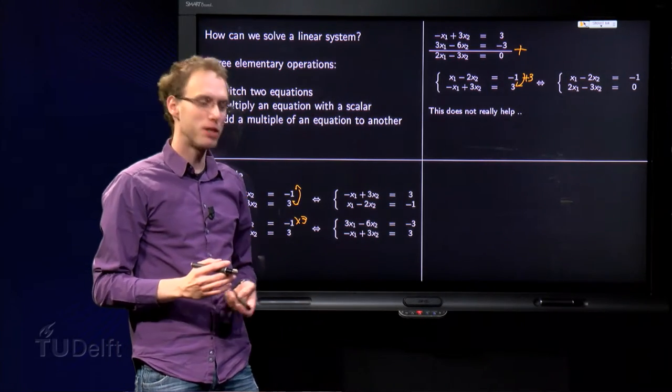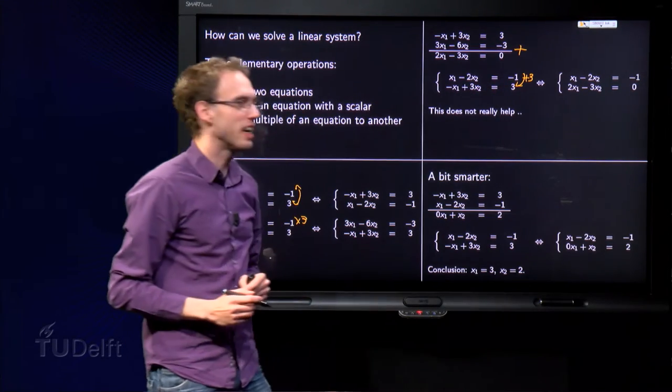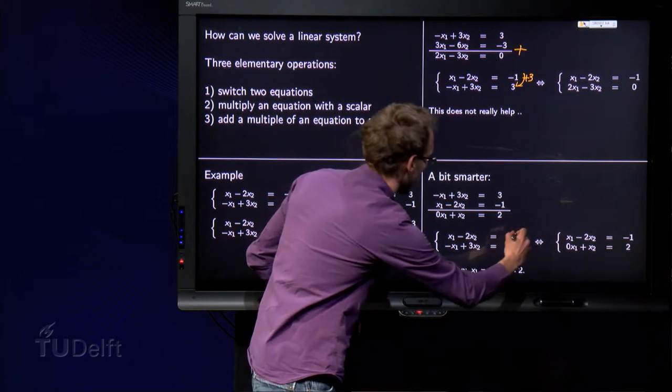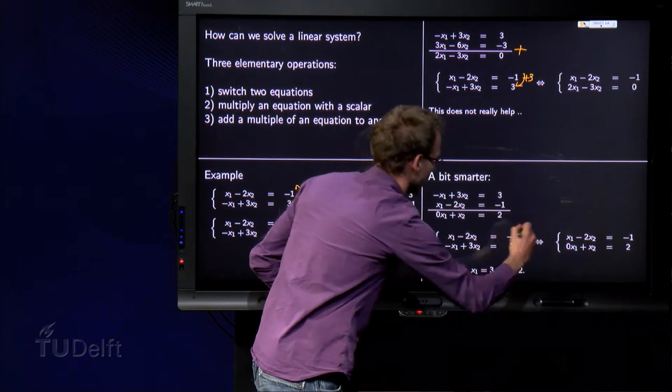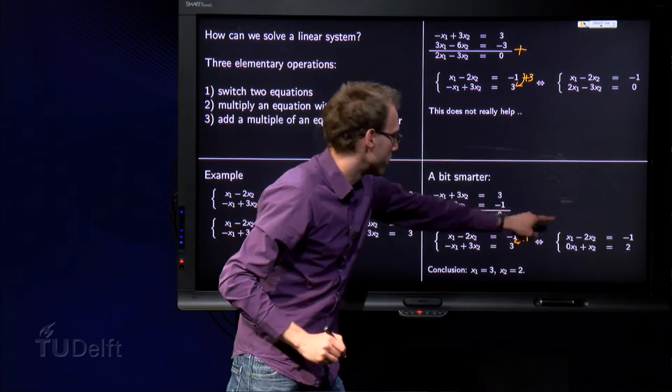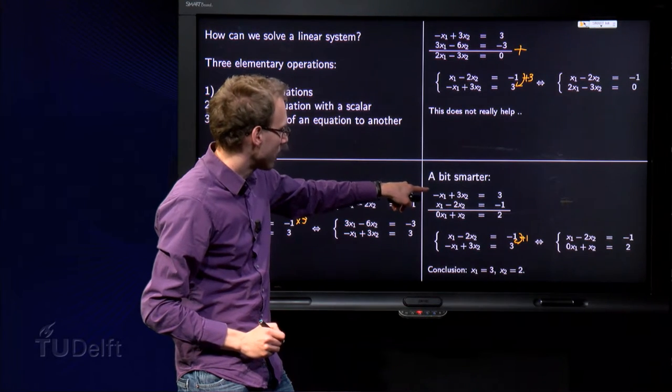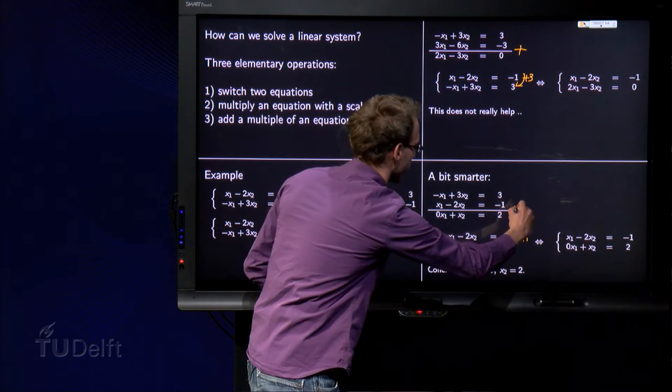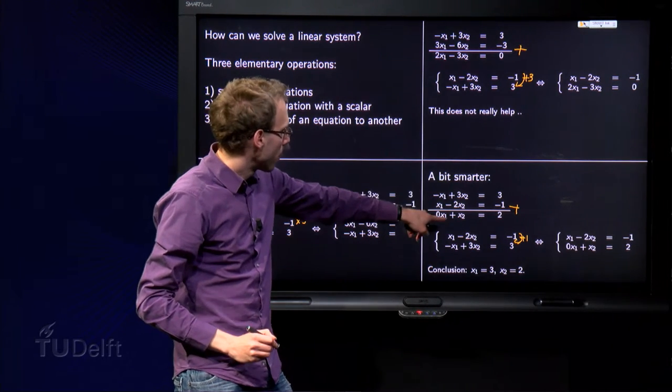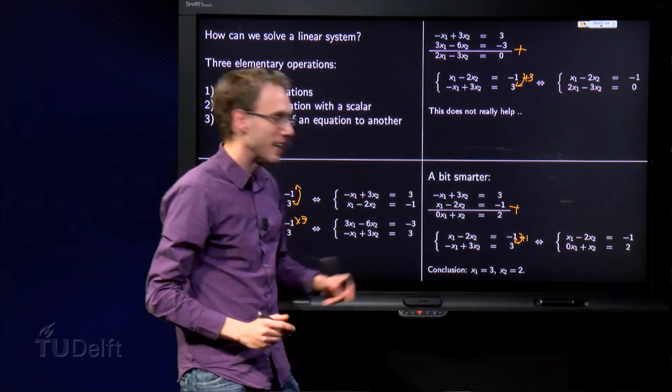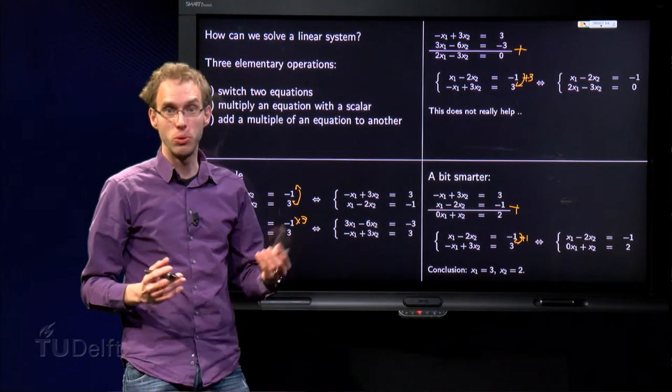Instead of adding three times the second equation to the first, we can also add one time the first equation to the second. We copy the first equation and replace the second equation by the second equation plus once the first equation. Then we get 0 plus x2 equals 2 as our new second equation. So the new second equation becomes x2 equals 2.